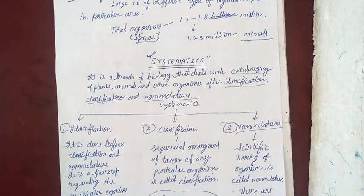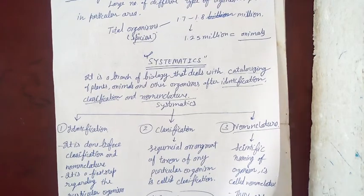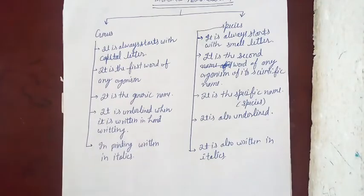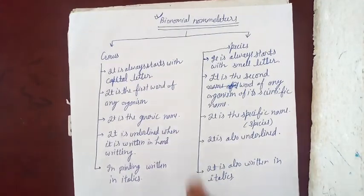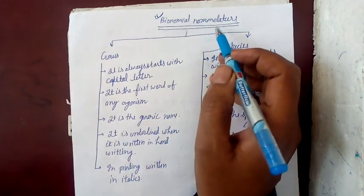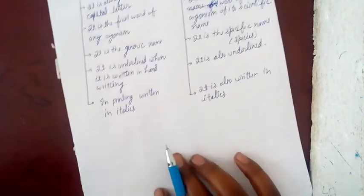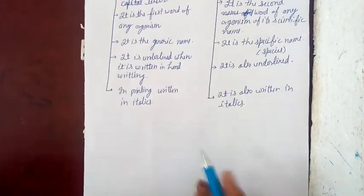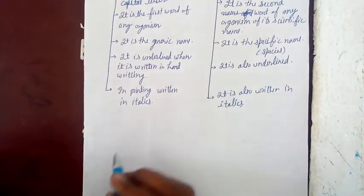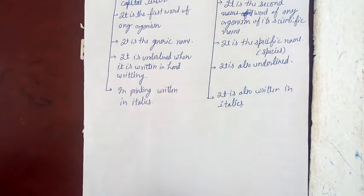So what is nomenclature? I have told you all that in today's era, in today's world, which kind of system is being followed? That is the binomial nomenclature.